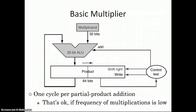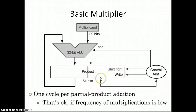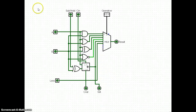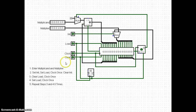Looking back at the basic multiplier, we've got two big components. We've got the ALU and we've got a 64-bit wide product register. The way this works is that the multiplicand is successively added to the product register as we shift through. In Logisim here, we've got this little register, the multiplicand, and I've already got it set up with some data in here.